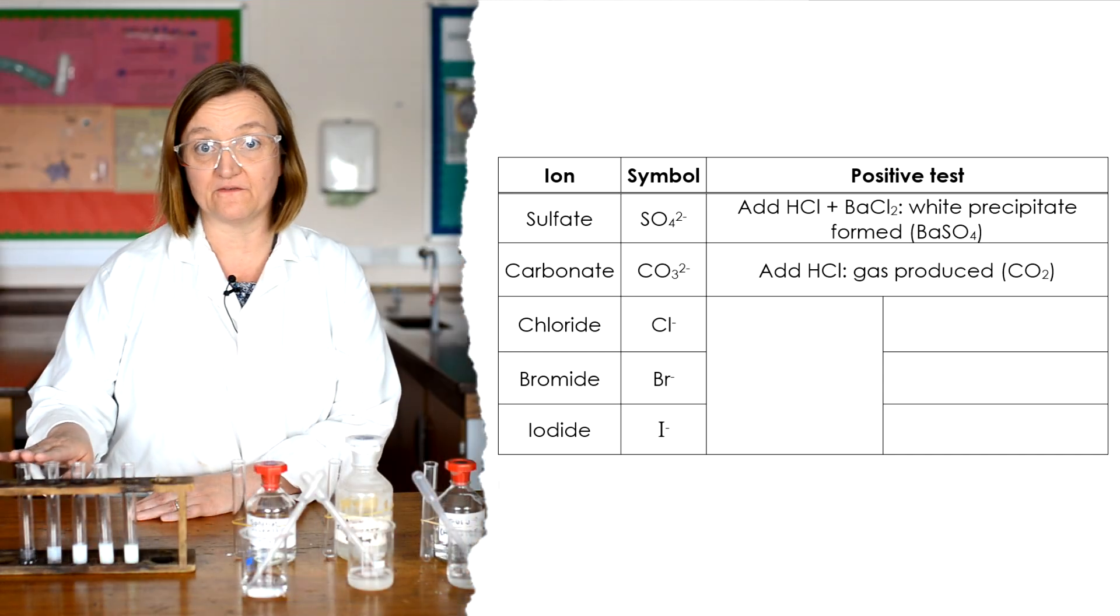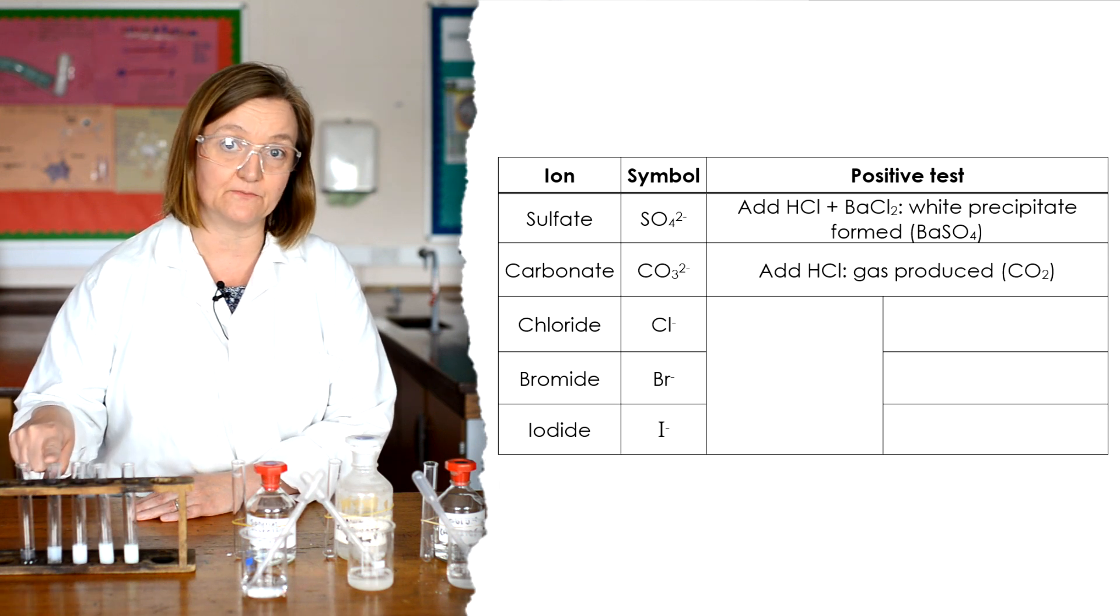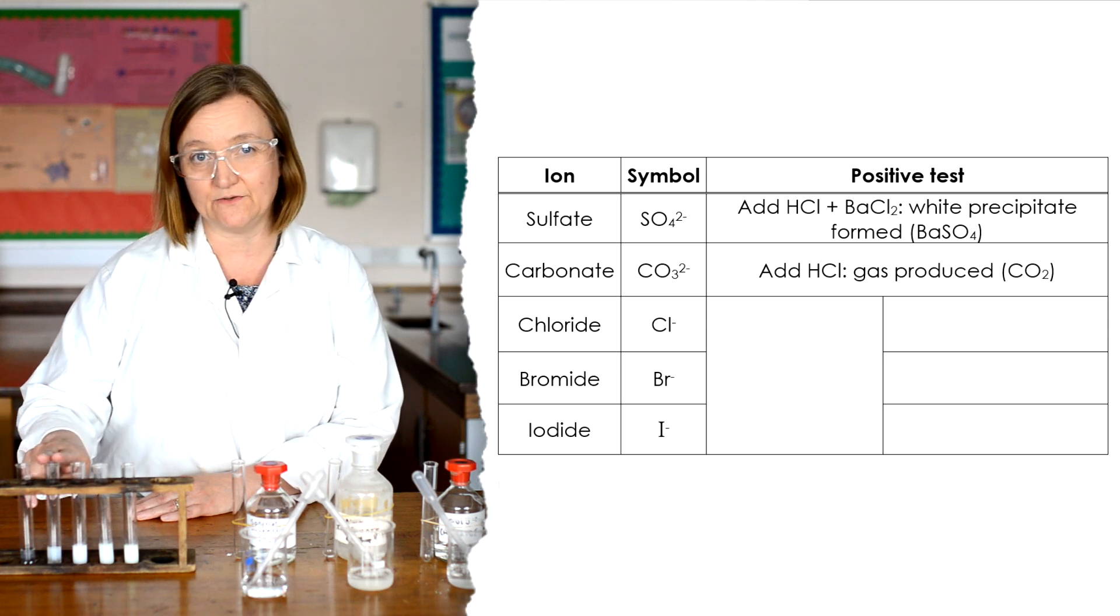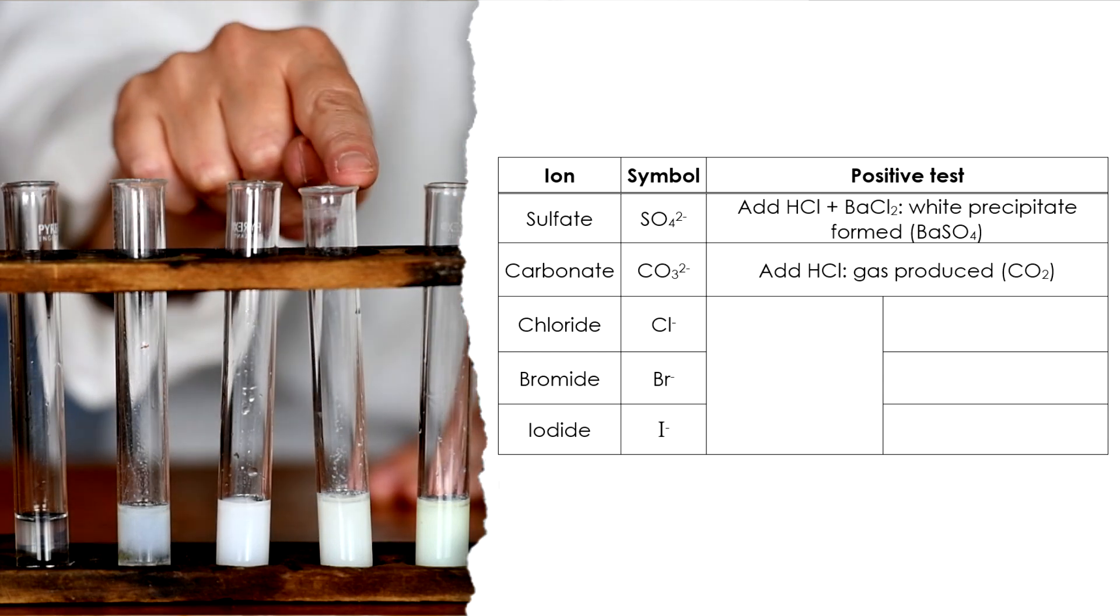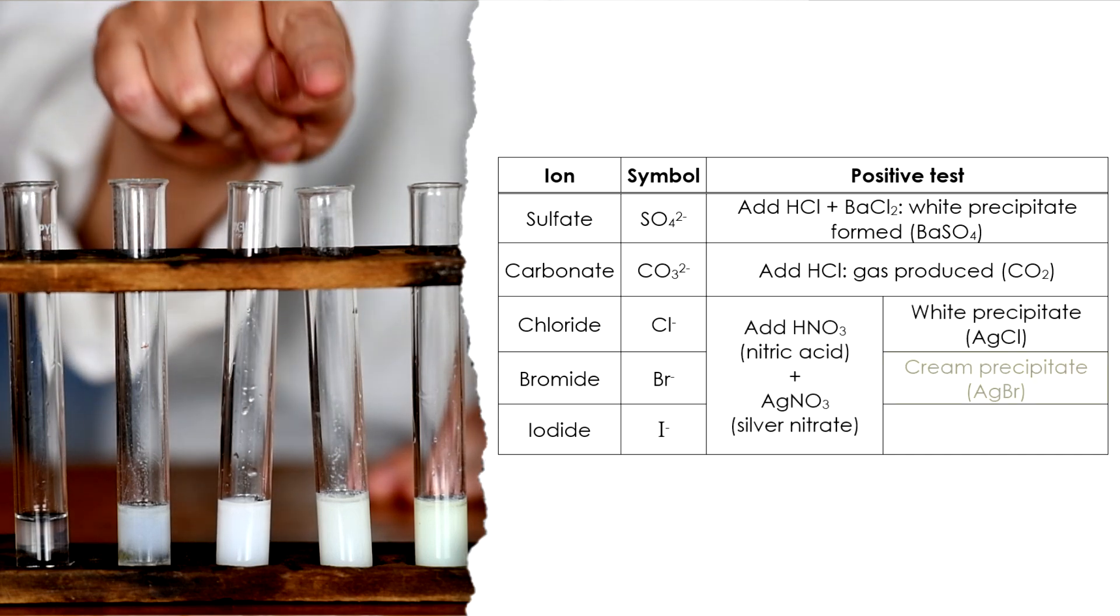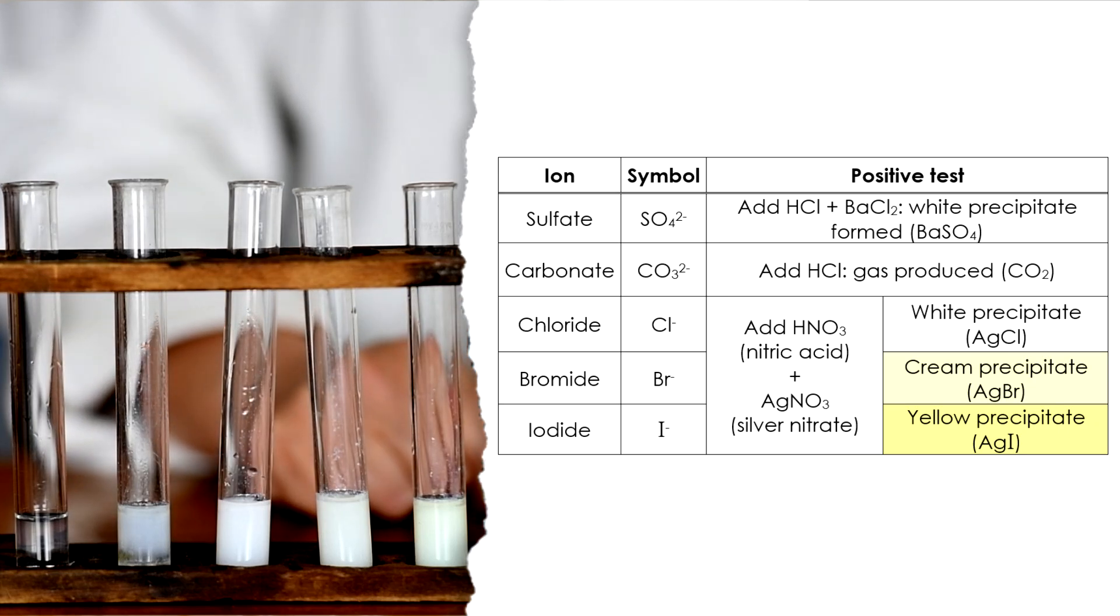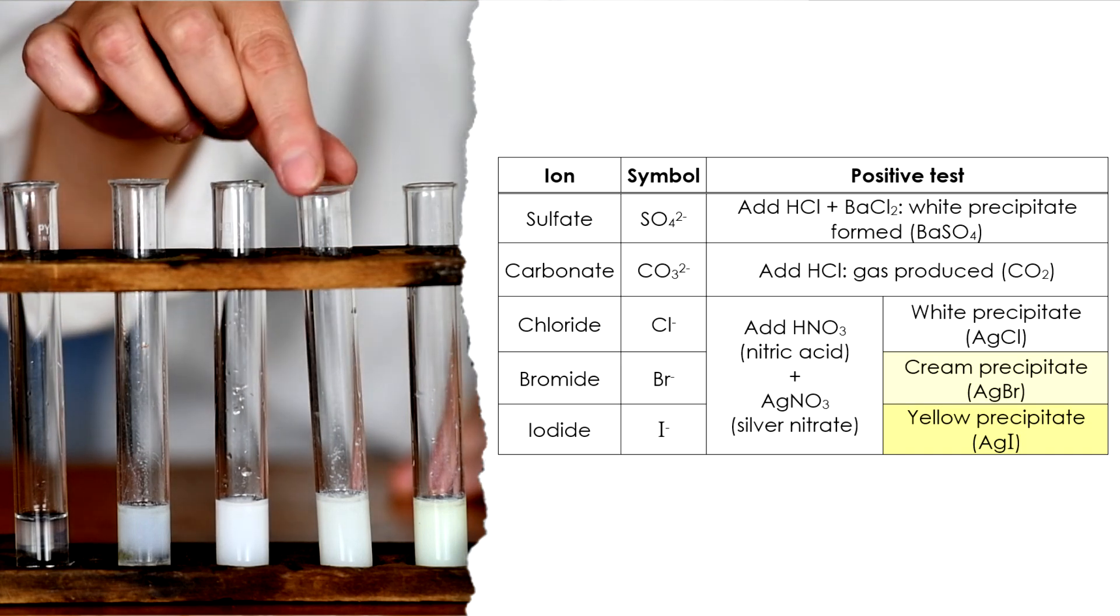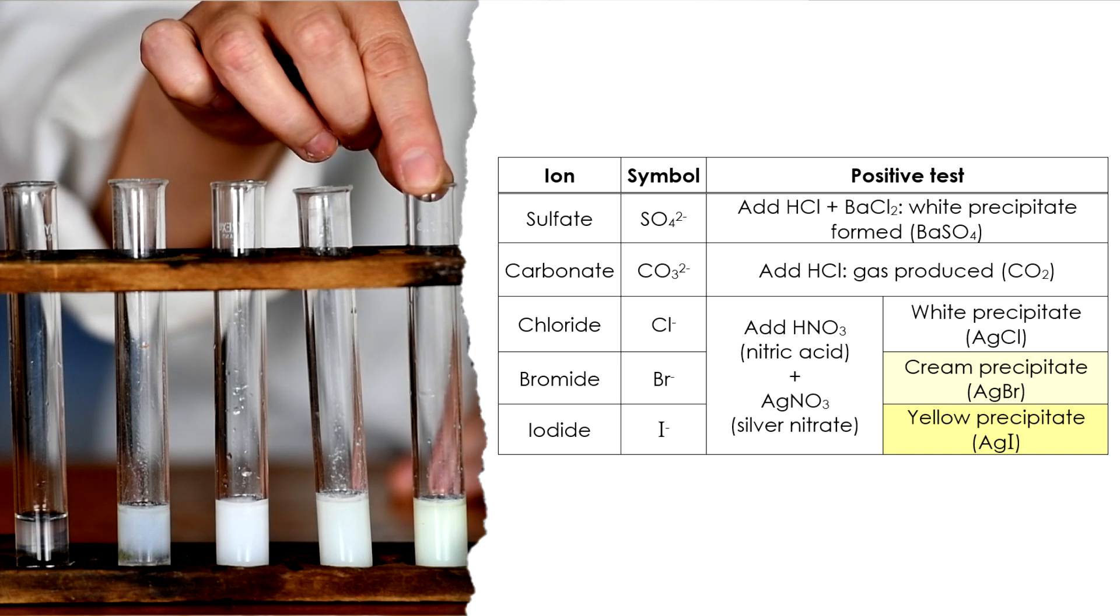So we've got four of our solutions that have produced precipitates. Now the carbonate we know already would fizz with hydrochloric acid. And yes, it gives a precipitate with silver nitrate. But we don't really use that as a test for carbonate. It's these three that we're most interested in. Here we've got an insoluble precipitate of silver chloride, silver bromide, and silver iodide. And what's really important to notice is the difference in the colours. Silver chloride is described as a white precipitate, silver bromide as a cream precipitate, and silver iodide as a yellow precipitate.